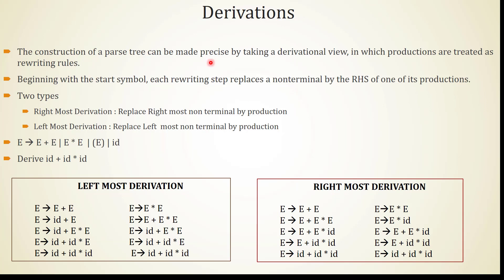Next is derivations. The construction of a parse tree can be made precise by taking a derivational view in which productions are treated as rewriting rules. Beginning with the start symbol, each rewriting step replaces a non-terminal using one of its productions. There are two types of derivations: rightmost derivation, which replaces the rightmost non-terminal by a production, and leftmost derivation, which replaces the leftmost non-terminal by a production.